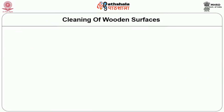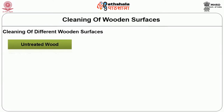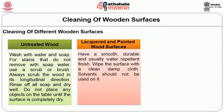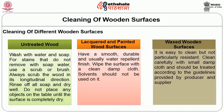Next we are going to talk about cleaning different wooden surfaces. For untreated wood, wash with water and soap. For stains that do not come off with soapy water, use a scrub or brush, always scrubbing in the longitudinal direction. Rinse off all soap and dry well. Lacquered and painted surfaces have a smooth, durable, usually water-repellent finish — wipe with a clean damp cloth; do not use solvents. Waxed wooden surfaces are easy to clean but not particularly resistant; clean carefully with a small damp cloth.